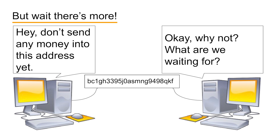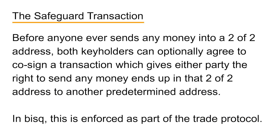BISC builds on this foundation by introducing an additional protection. When you set up a 2-of-2 address, there's a neat trick you can do. Before anyone ever sends any money into a 2-of-2 address, both keyholders can optionally agree to co-sign a transaction, which gives either party the right to send any money that ends up in the 2-of-2 address to a predetermined address. This transaction acts like a safeguard. Both parties can co-sign an agreement before any money is ever at stake, so that, in the event of a dispute, either party can use this safeguard transaction to send the money to someone they both trust.